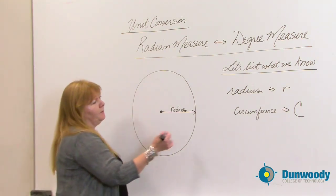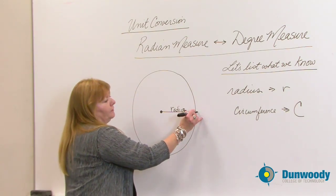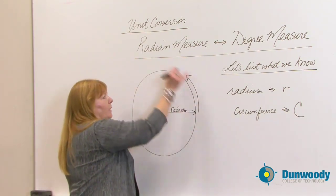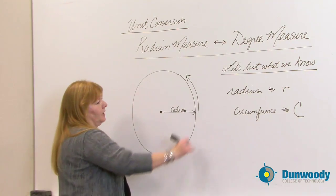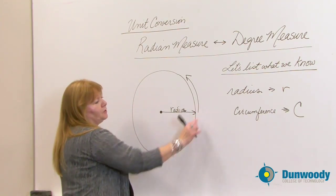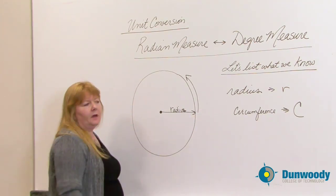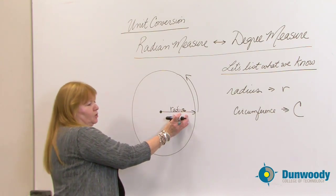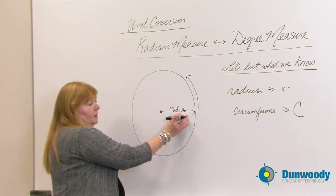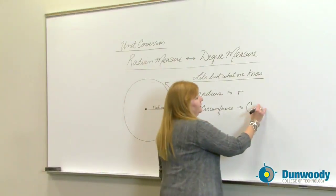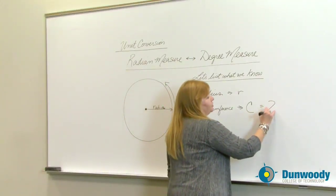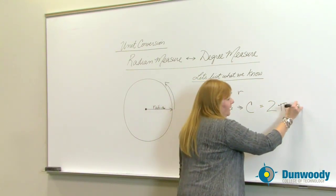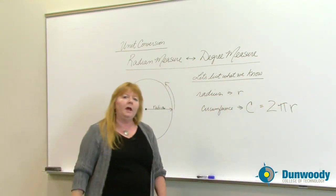The distance around the circle has a name, and it is called the circumference. Circumference, using radius measure, is represented as 2 times pi times the radius. This is something you should know.